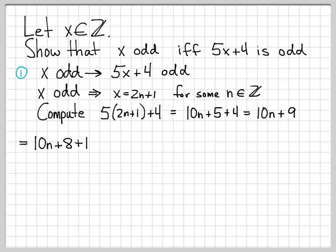I'm going to write 10n plus 9 in a funny way. I'm going to write it as 10n plus 8 plus 1. I haven't changed anything, just written 9 as 8 plus 1. The reason I'm doing this is because this now lets me factor 2 out of the first part of this equation. We can write 10n plus 8 as 2 times quantity 5n plus 4.